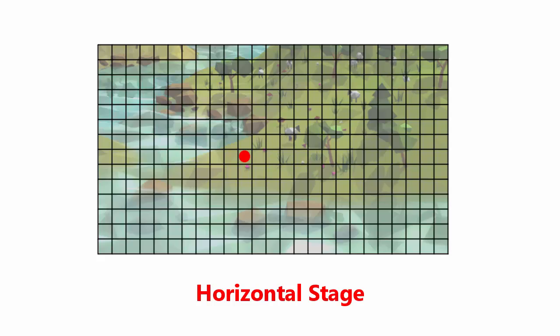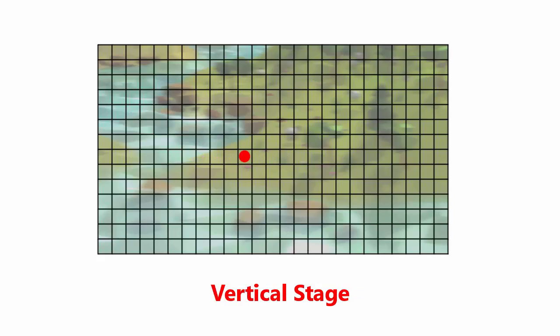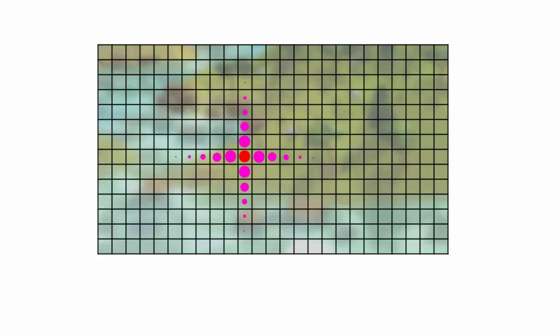Instead we split the Gaussian Blur into two stages. In the first stage we calculate the output colour of a pixel by sampling horizontally, applying the weights, and adding the colours of all the samples together. With a 7x7 kernel that only required 7 texture samples per pixel. We then do another pass starting with the horizontally blurred texture, calculating each pixel's colour based on a weighted average of 7 samples vertically. By splitting the blur into two stages we only need 14 samples per pixel instead of 49, or for our 11x11 kernel, 22 samples instead of 121 — a significant optimisation.